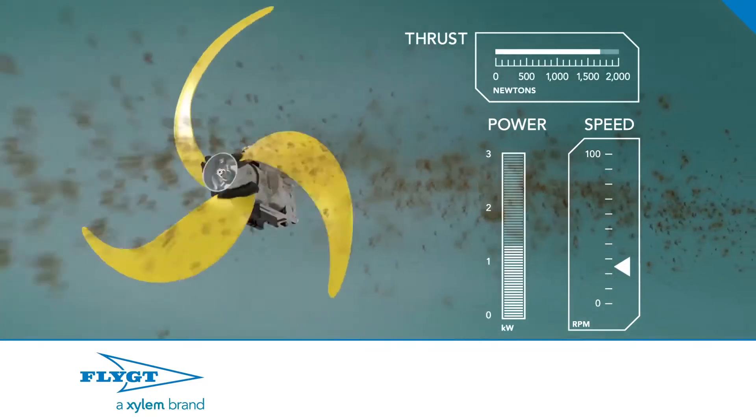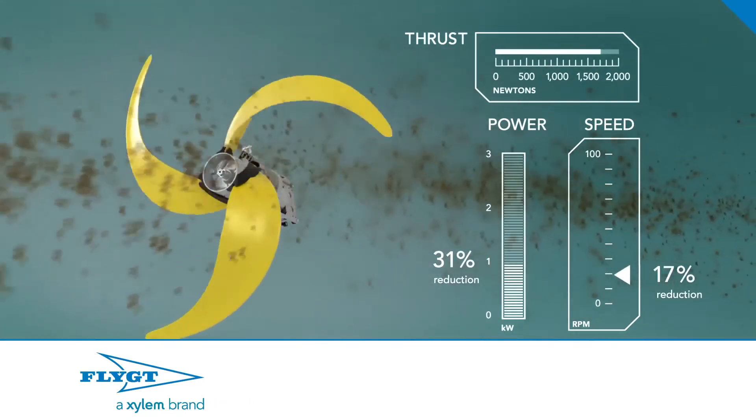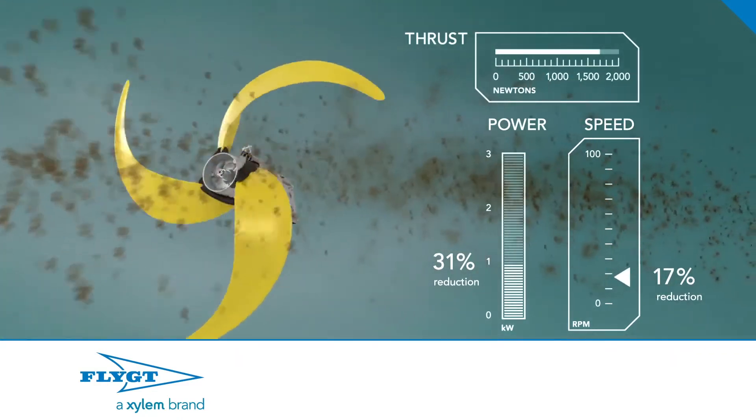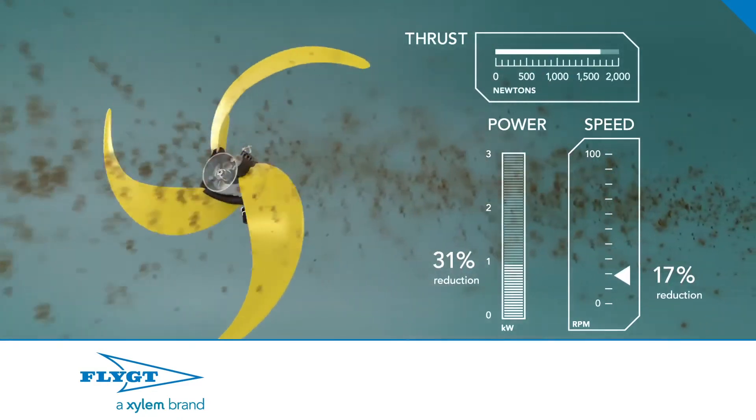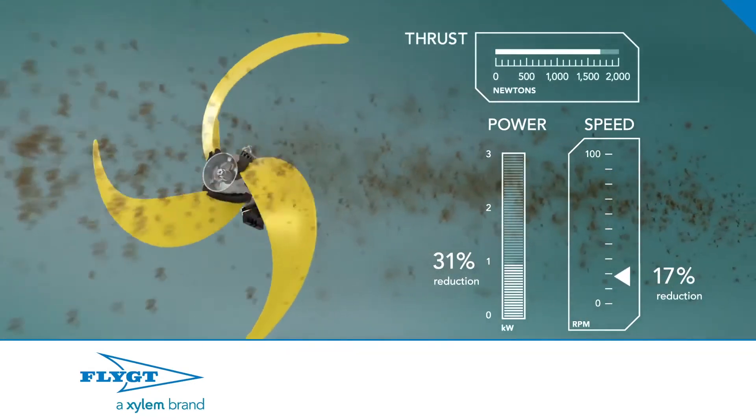Second, watch what happens when the mixer starts slowing down to meet the actual needs in the tank. Small reductions in speed and thrust come with much larger reductions in power. These reductions in power and speed also can extend the life of the mixer and the intervals between servicing.